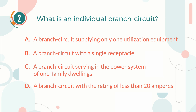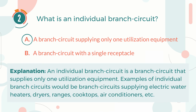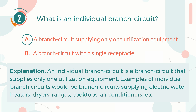The correct answer is A: a branch circuit supplying only one utilization equipment. Explanation: An individual branch circuit is a branch circuit that supplies only one utilization equipment. Examples include branch circuits supplying electric water heaters, dryers, ranges, cooktops, and air conditioners.